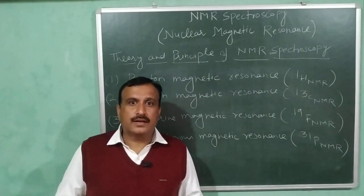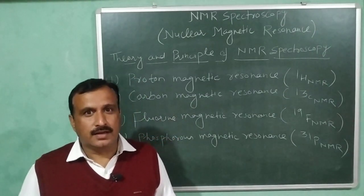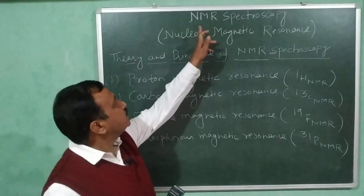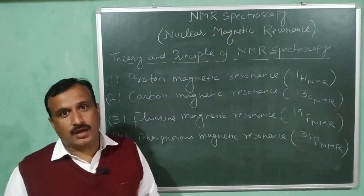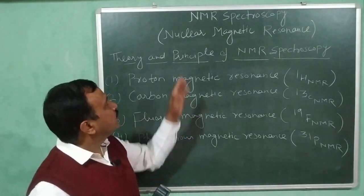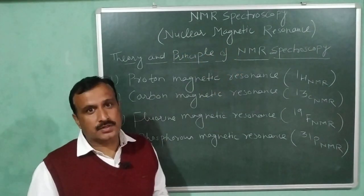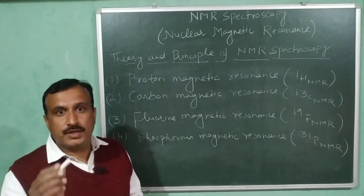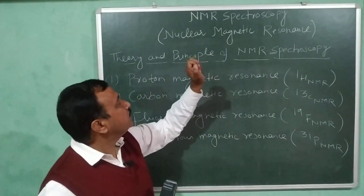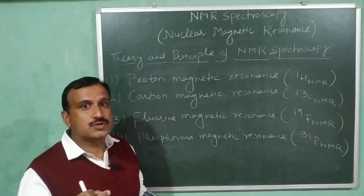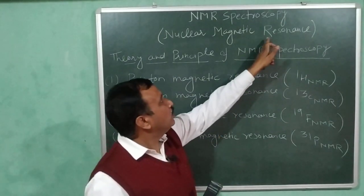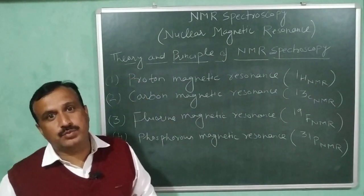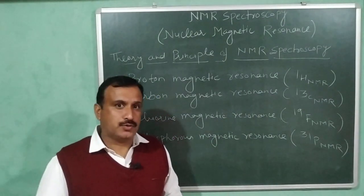Hello everyone, very warm welcome to DMG Chemistry Classes. From this video, I am going to start a new topic that is NMR Spectroscopy. The full form of NMR is Nuclear Magnetic Resonance. As the name indicates, this spectroscopy is based upon the magnetic property of the nucleus. I will also explain this word 'resonance' when I discuss the theory and principle behind NMR spectroscopy.